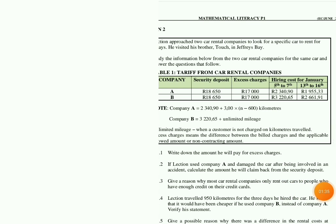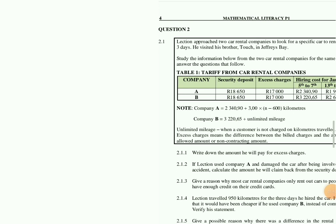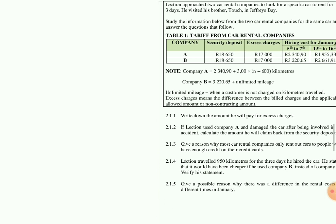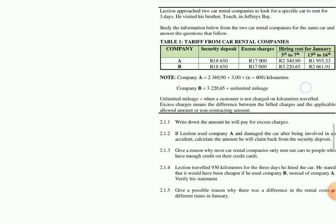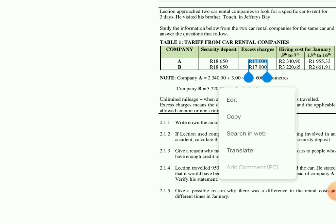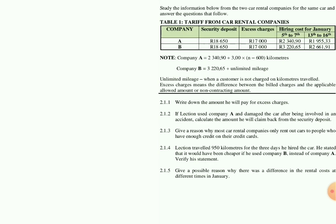I've zoomed in so you can see properly. Question 2.1.1: write down the amount he will pay for excess charges. This is very easy — it's actually looking right at you. The access charges are R17,000. Both companies show R17,000 for access charges.